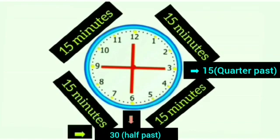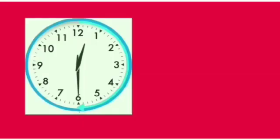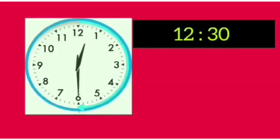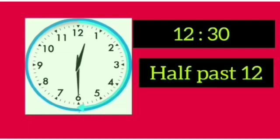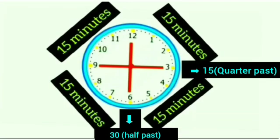In the same way, if the minute hand is on 6, it means 30 minutes. The time of 30 minutes is called 'half past.' This clock is showing 12:30. Here, 30 minutes means half an hour, so for half an hour we will say half past 12.